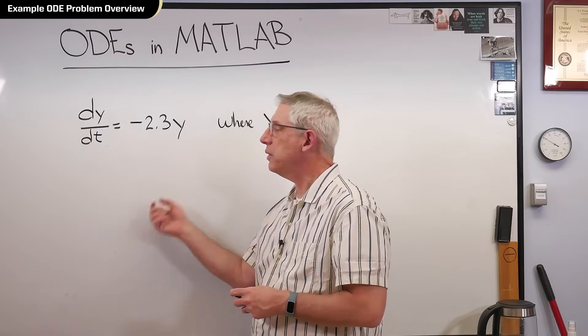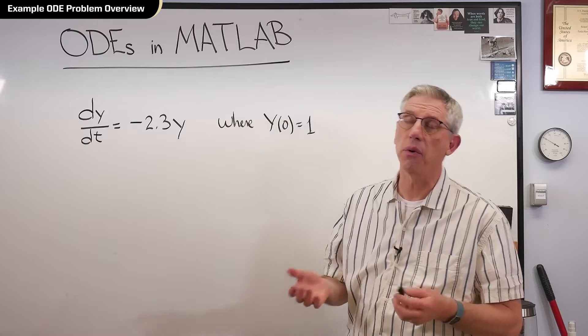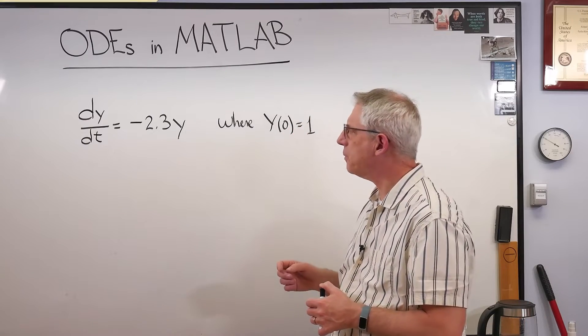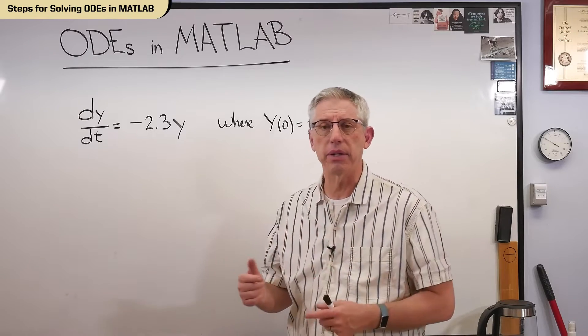Now, the differential equation solver we're going to use in MATLAB is called ODE45. It's a fourth, fifth order Runge-Kutta, I think is where the numbers come from. And so, let's go over in concept, step by step, what we've got to do.